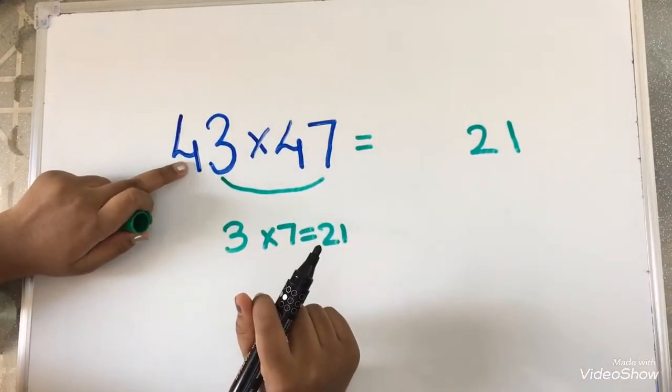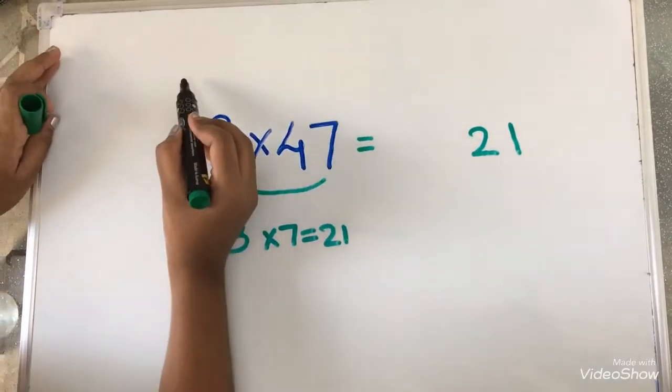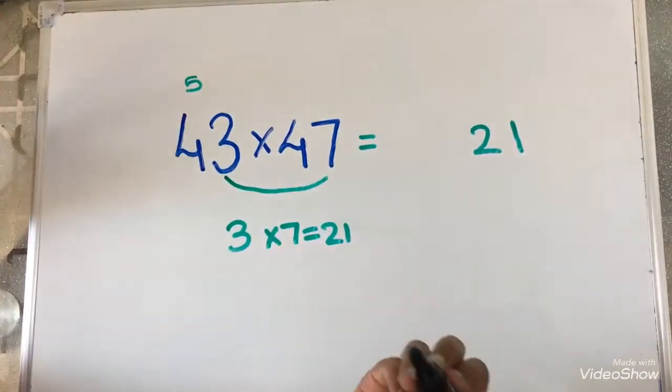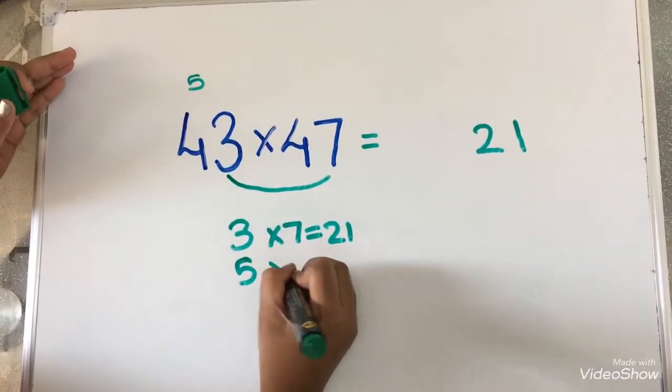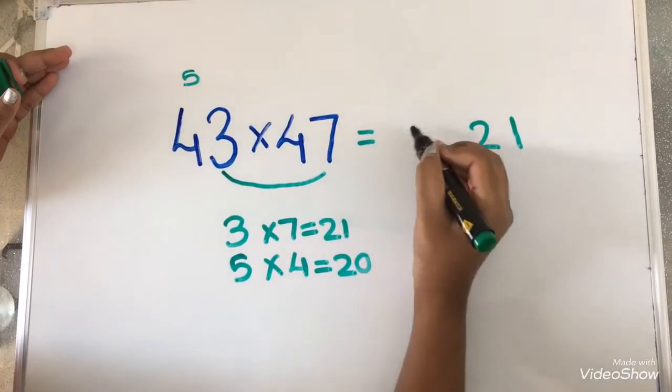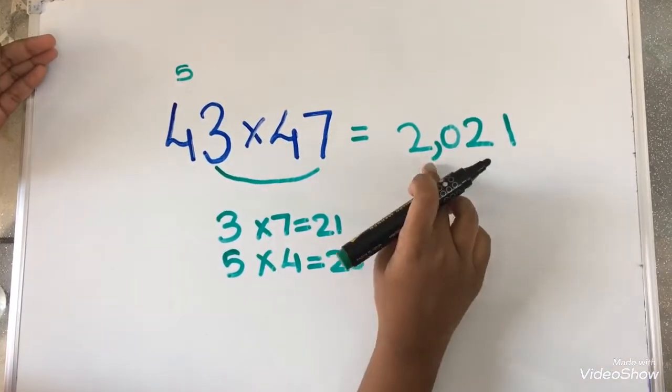Now we should take this 4. The number after 4 equals 5, so I am writing 5 here. 5 into 4 equals 20. I am going to write 20 here. The answer is 2021.